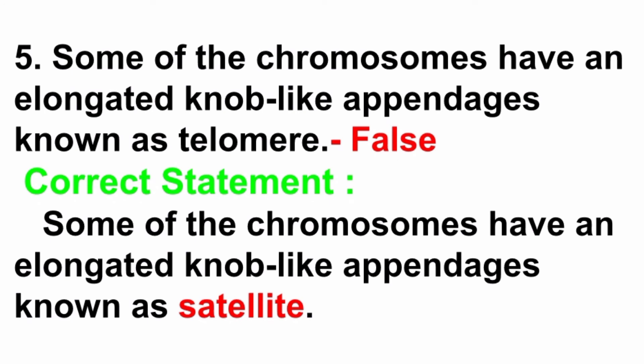Fifth question: some of the chromosomes have elongated knob-like appendages known as telomere. Answer is false. The correct statement is: some of the chromosomes have elongated knob-like appendages known as satellite — not telomere, but satellite.